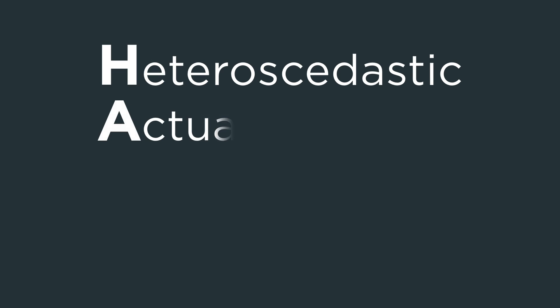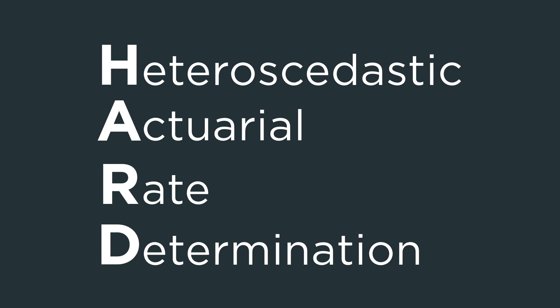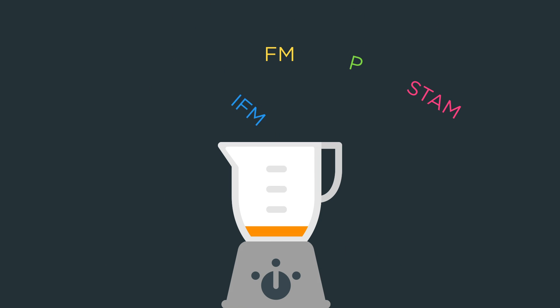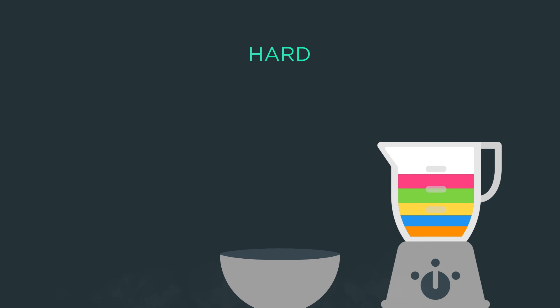Now let's go through the exam. Heteroscedastic Actuarial Rate Determination is a brand new exam that you must pass in order to get your designation. Exam HARD takes everything you learned from previous exams and then asks you to solve challenging problems completely unrelated to everything you learned from previous exams.